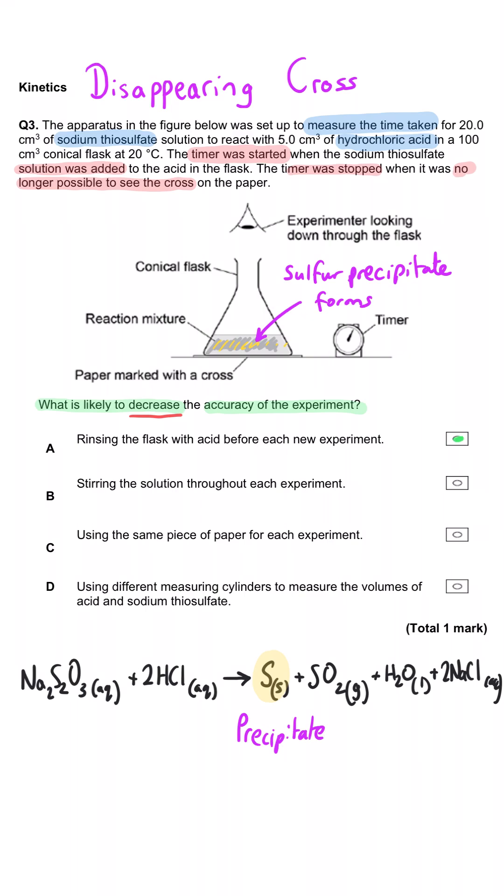Well this is actually the answer because since acid is one of the reactants, introducing extra acid at the start of each experiment will mean there's more acid in the flask and the sodium thiosulfate will therefore react faster. So A is correct.